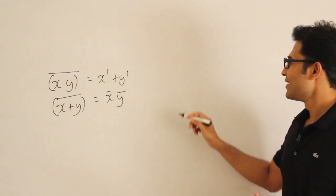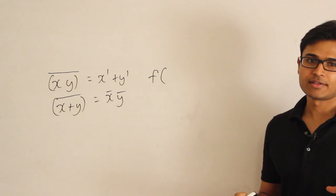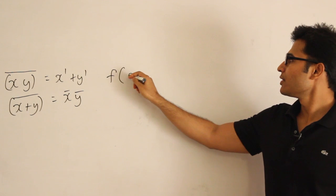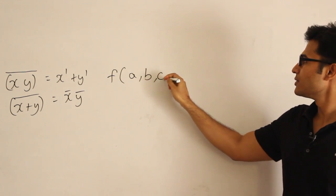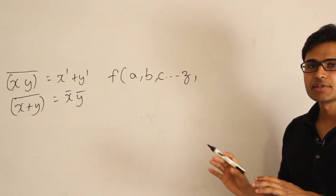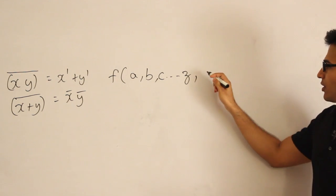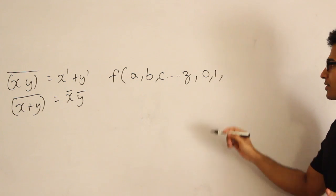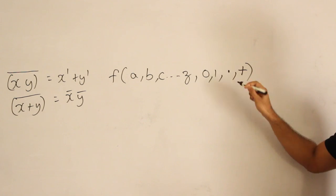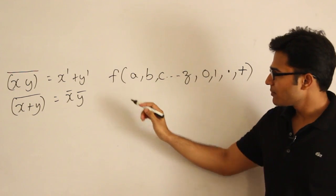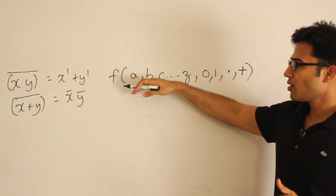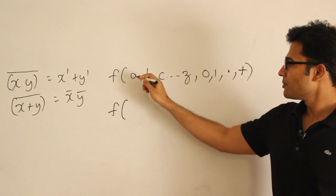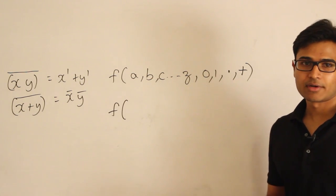Let's say there is a function f which is a switching expression containing all the variables a, b, c through z, some constants zero and one, and operators dot and plus. De Morgan's law says that if you want the complement of this expression, you take the same expression and replace every literal with its complement.